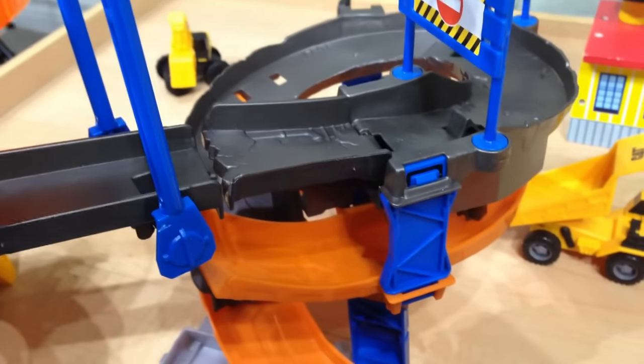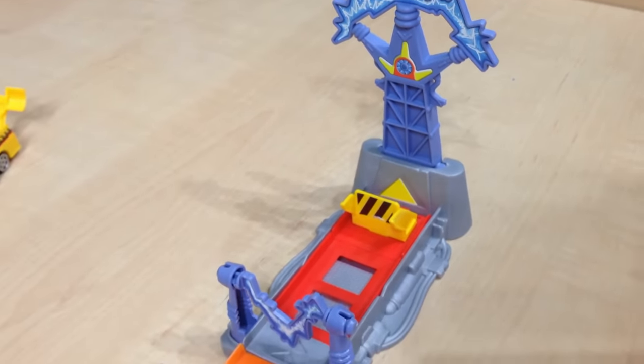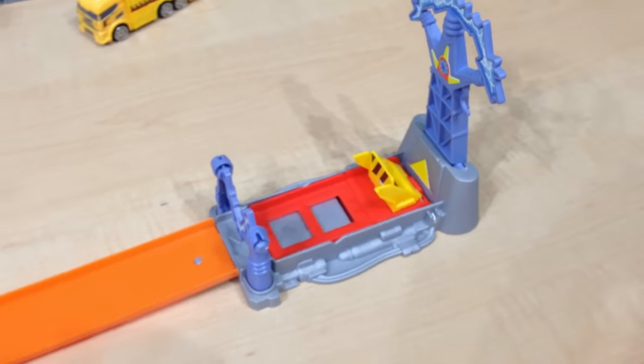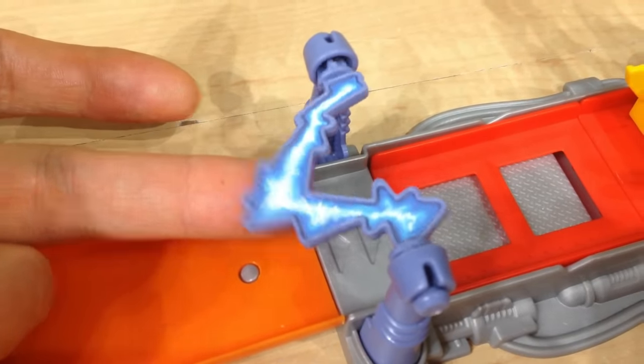Listen. This ramp is headed down somewhere very dangerous. It goes down all the way to the electricity zone. See? Super high voltage. We can't have the cars going down there. Look at this lightning. Super dangerous stuff, okay?